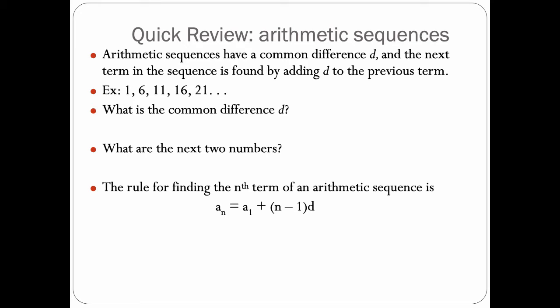For example, if we have 1, 6, 11, 16, 21 and it keeps going on, what is our common difference? We are adding 5, so our d is 5. The next two numbers would be 26 and 31.